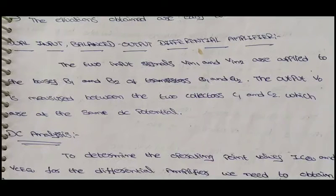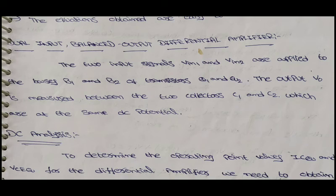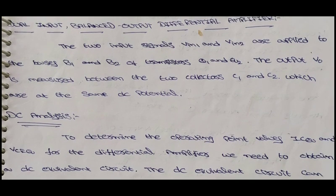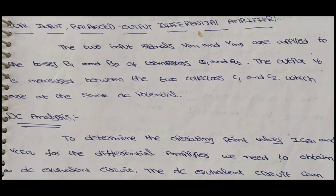Hi friends. Today's class we are going to discuss about the dual input balanced output differential amplifier. We already discussed about what is meant by differential amplifier and what are the configurations in differential amplifiers. There are total four types: dual input balanced output, dual input unbalanced output, single input balanced output, and single input unbalanced output. So in this class we are going to discuss about the dual input balanced output differential amplifier.